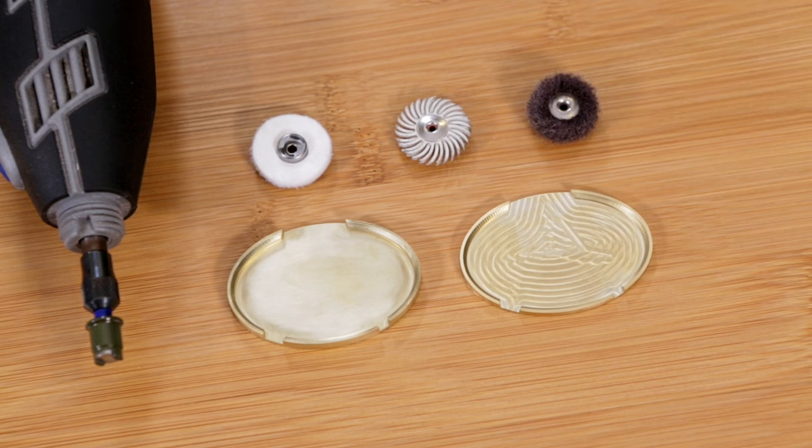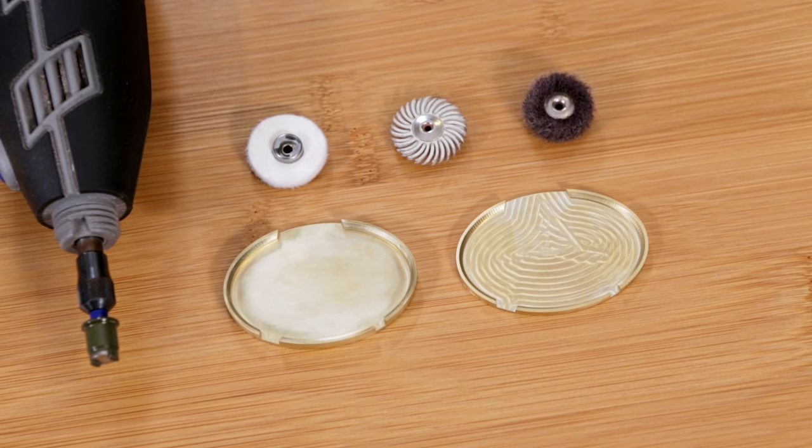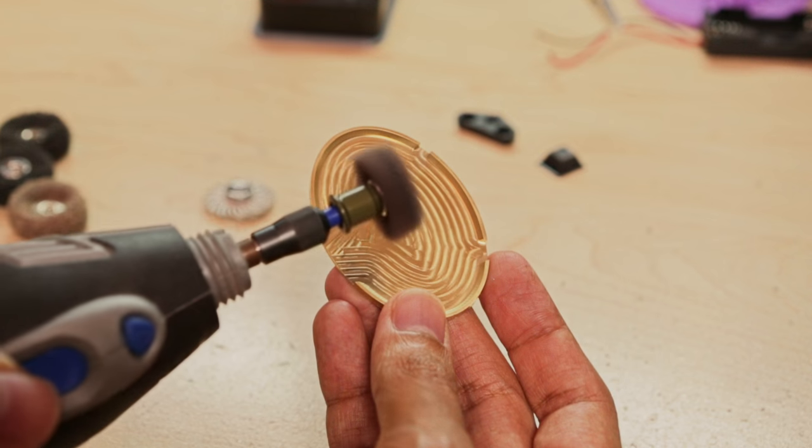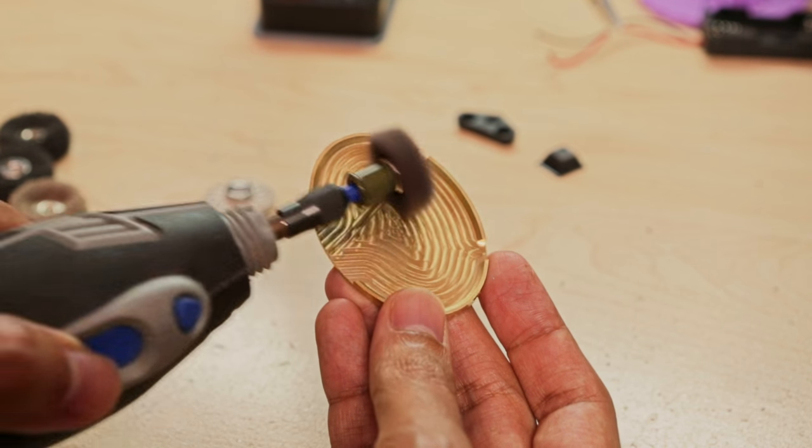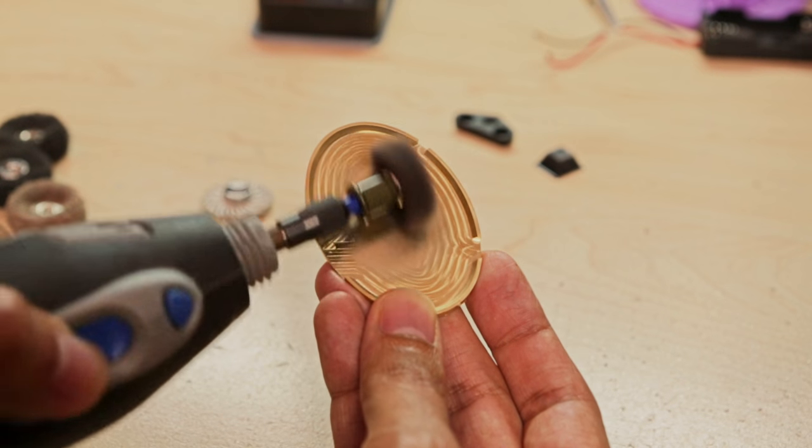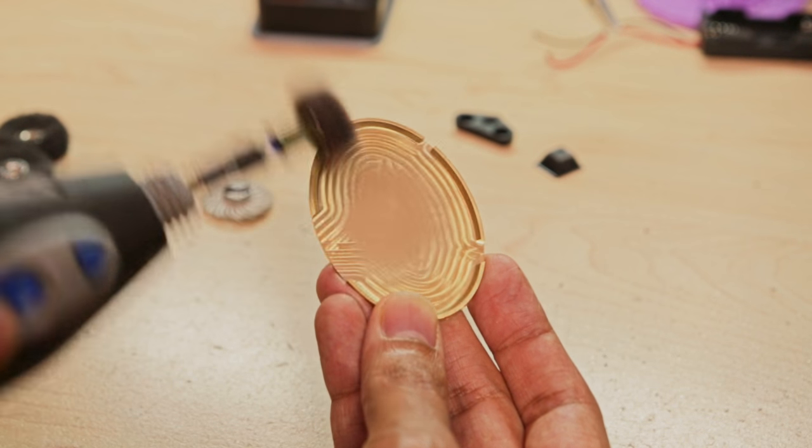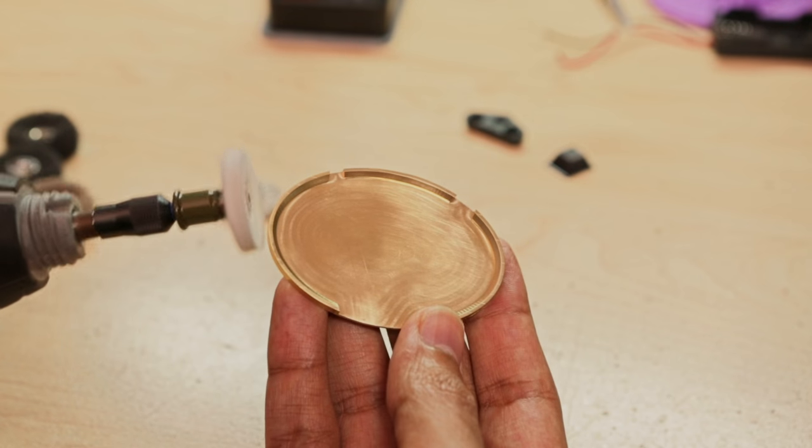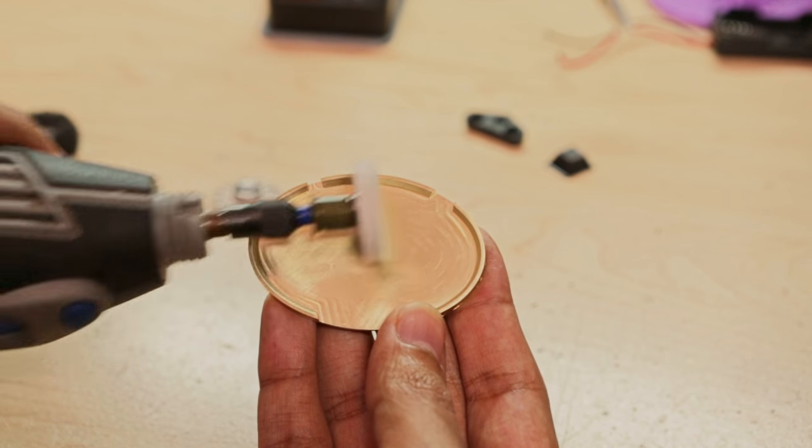So to remove the patterns from the machining process, I'll need to polish them using a rotary tool and some polishing wheels. A few passes with the scotch brite wheel shows how you can remove these machining lines. Then, I used the buffing wheel to give the surface a mirror finish.